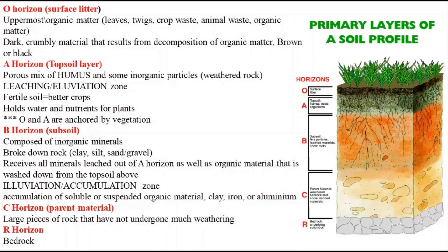The soil of horizon A and horizon B is often mixed while plowing the fields. Now we will talk about the C horizon, also called saprolite. This layer is devoid of any organic matter. The geological material present in this zone is cemented.